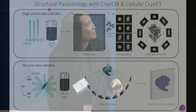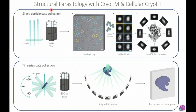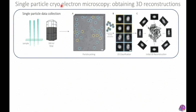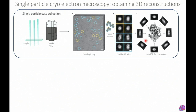Cryo-EM comes in two flavors, both aimed at getting a 3D reconstruction at high resolution of your protein complex of interest. In single particle cryo-EM, we purify our protein out of cells, freeze it on a grid, take millions of images, and get many different views from particles in random orientations in ice. We classify those into 2D class averages, which we back-calculate to the 3D volume.